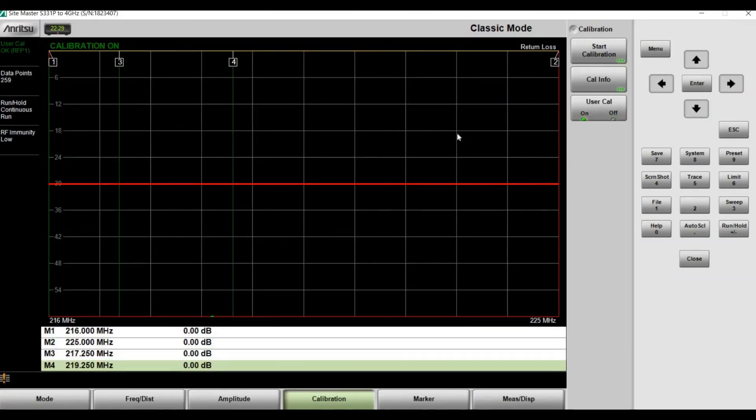Now that we have set up our Anritsu and calibrated the device, we're ready to sweep an antenna. All you have to do is plug in the N female with the end of an antenna receiver side or transmitter side using one of the adapters provided by the adapter kit. And you should be good to go. I will show you in the next slide an antenna swept and go over it quickly.